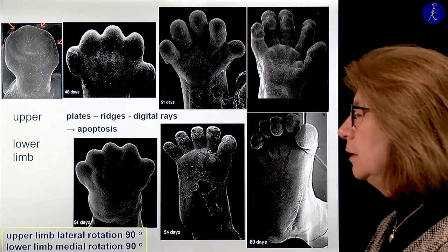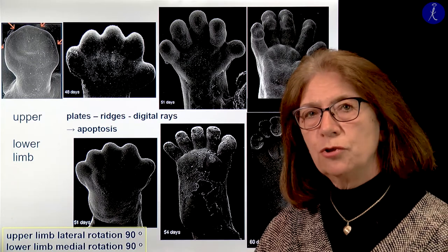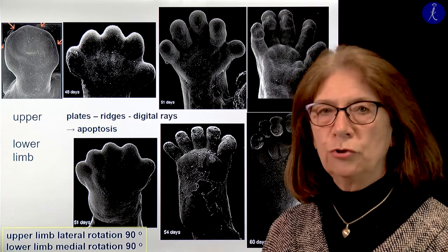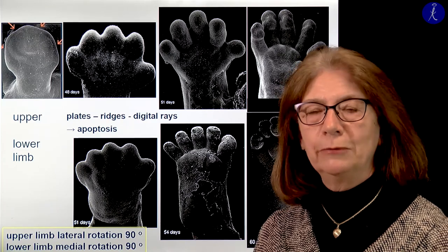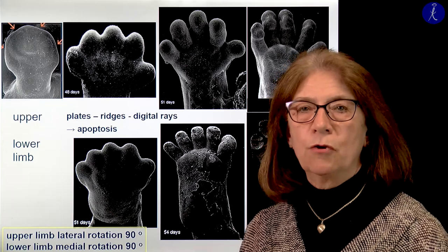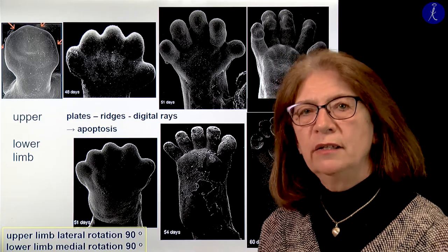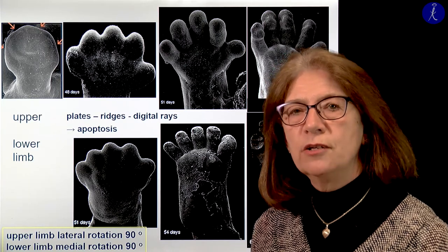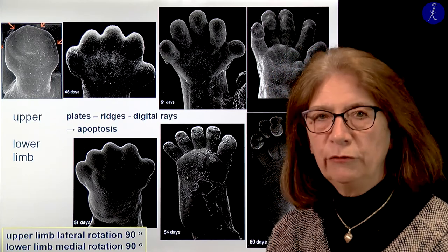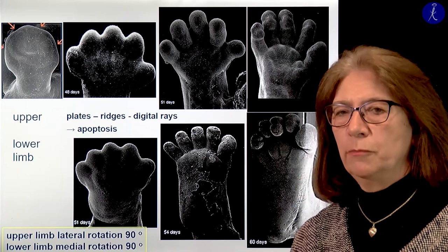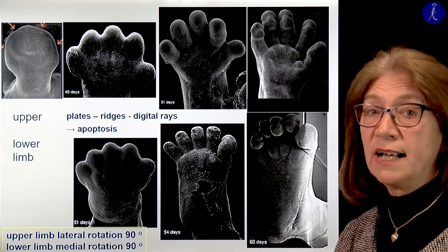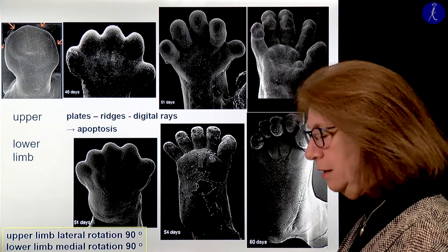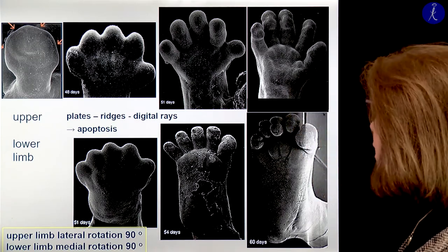The lower limb follows the development of the upper limb a few days later, but similarly. The upper limb has a lateral rotation and the lower limb has a medial rotation, which you can follow very well with the course of the femoral artery — it is in the anterior territory in the inguinal region, then twists around the femur, and appears in the popliteal region on the back side of the lower limb. This is due to the medial rotation of the lower limb.